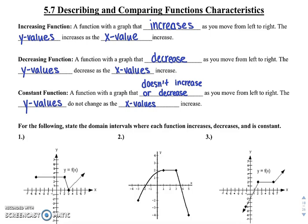A constant function just means that your graph doesn't increase or decrease as you move from left to right. The y values aren't going to change; your x values just keep increasing, but nothing is happening with that y.